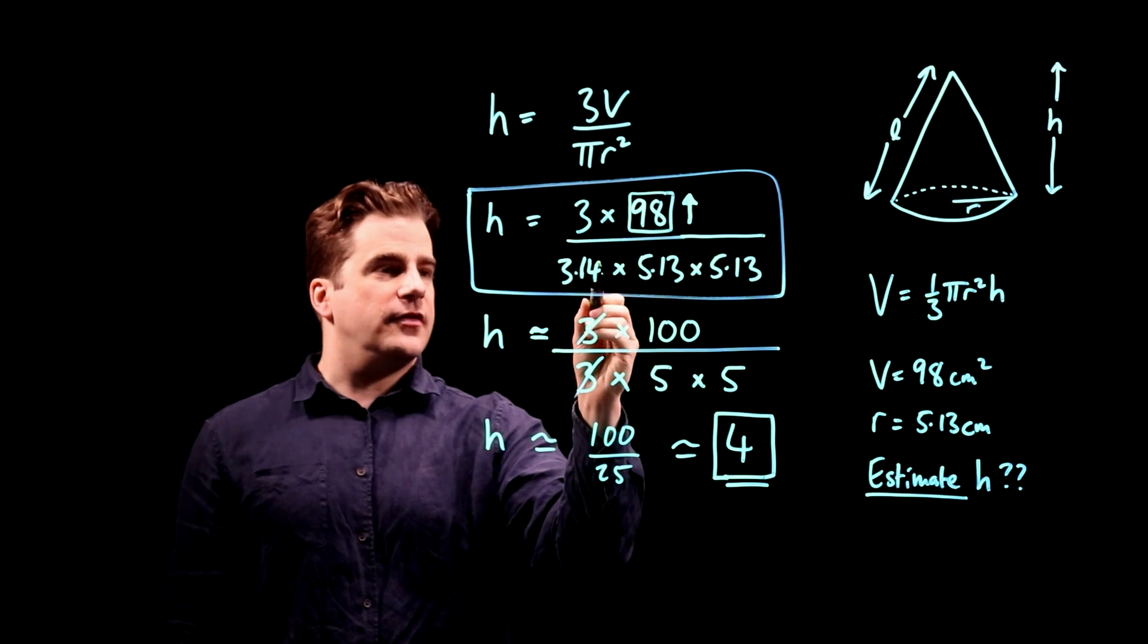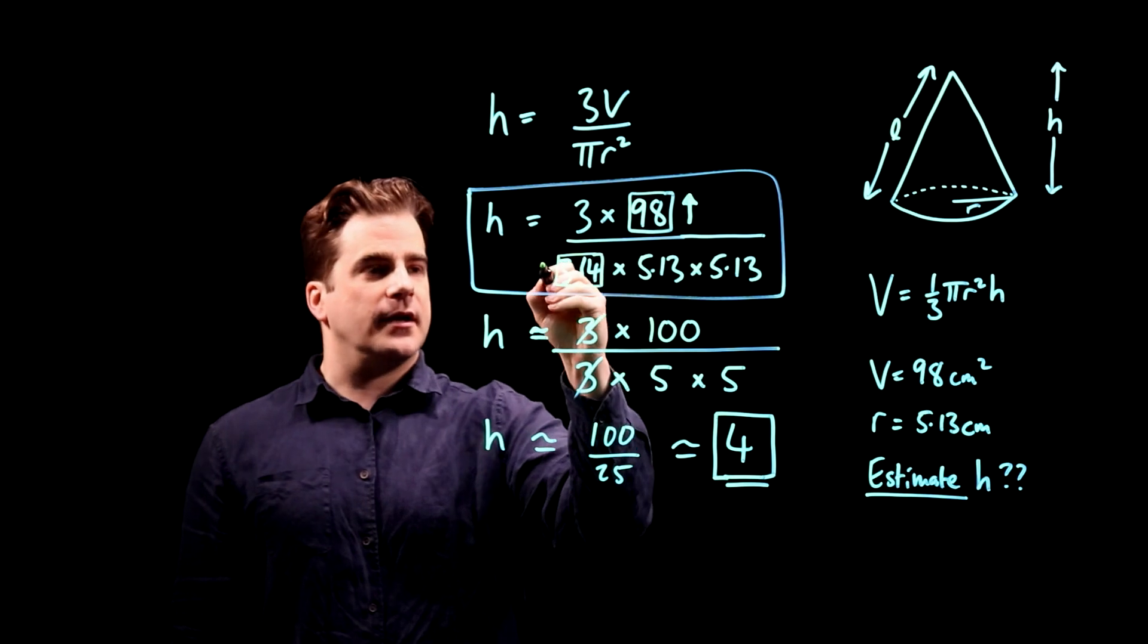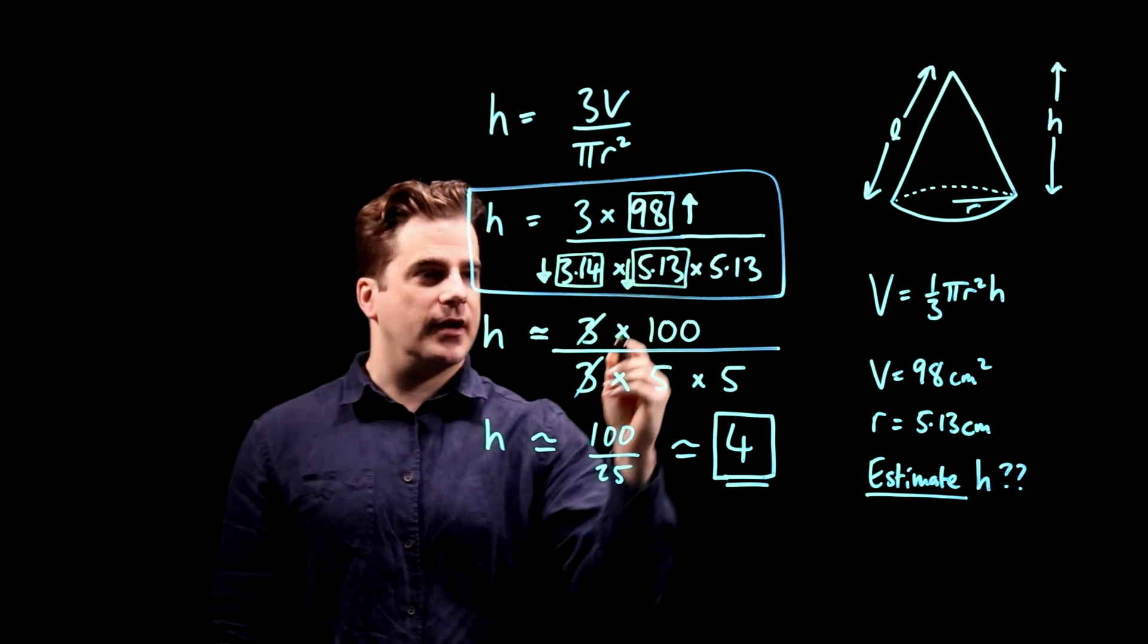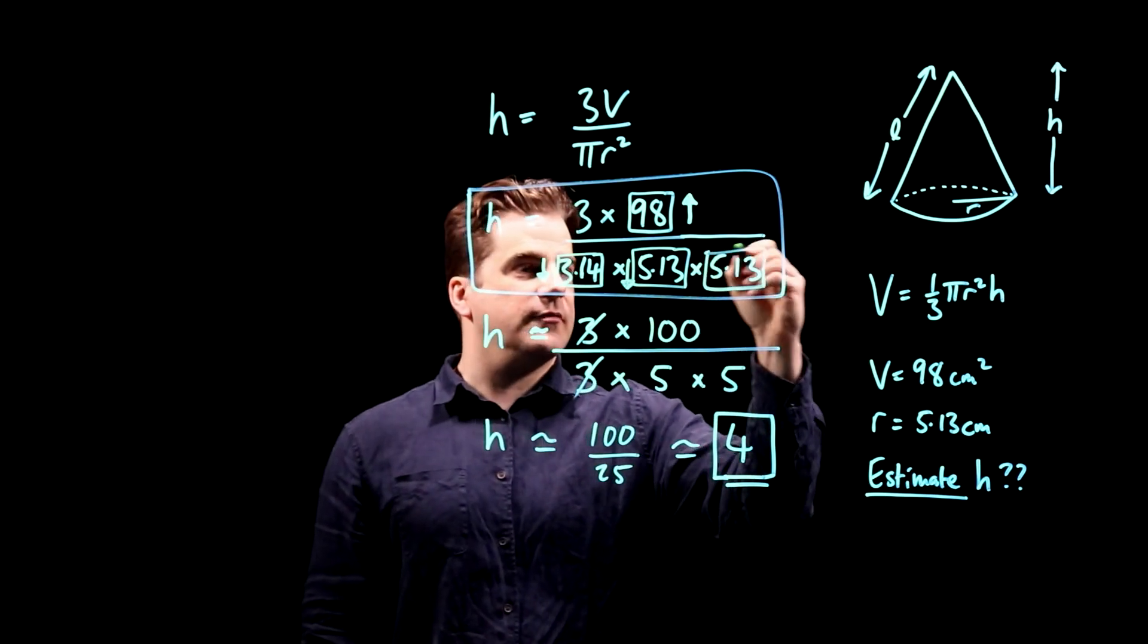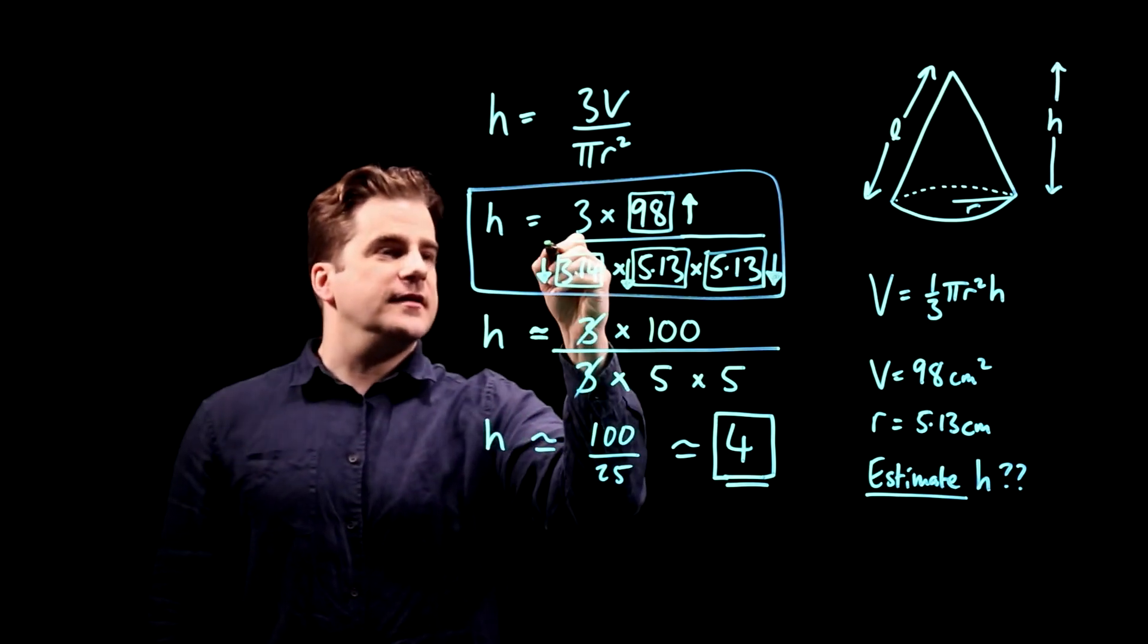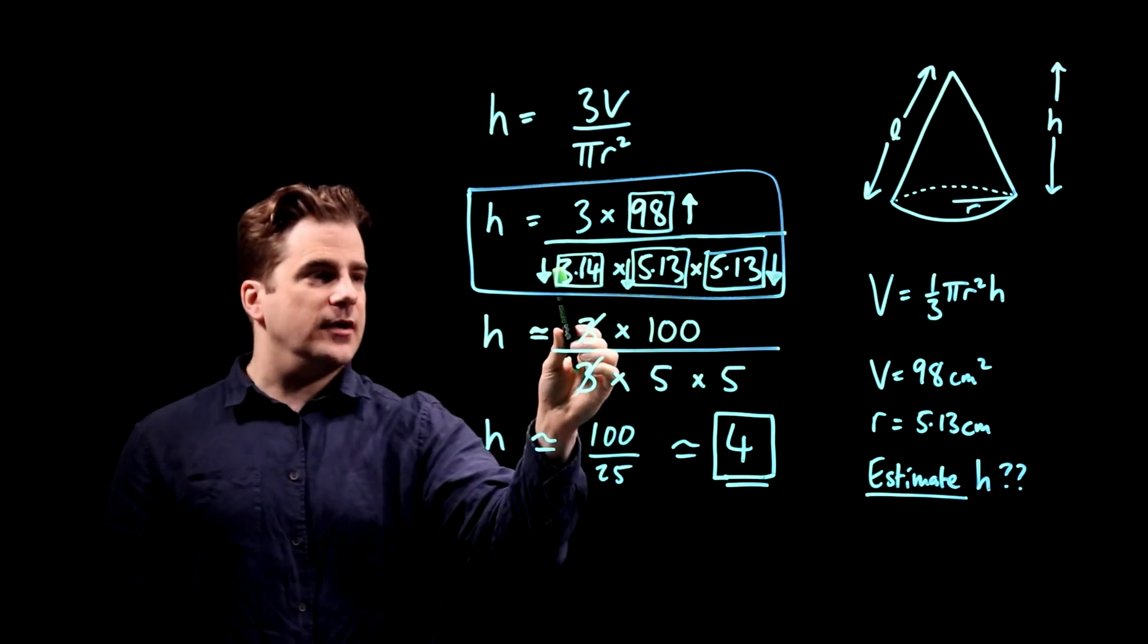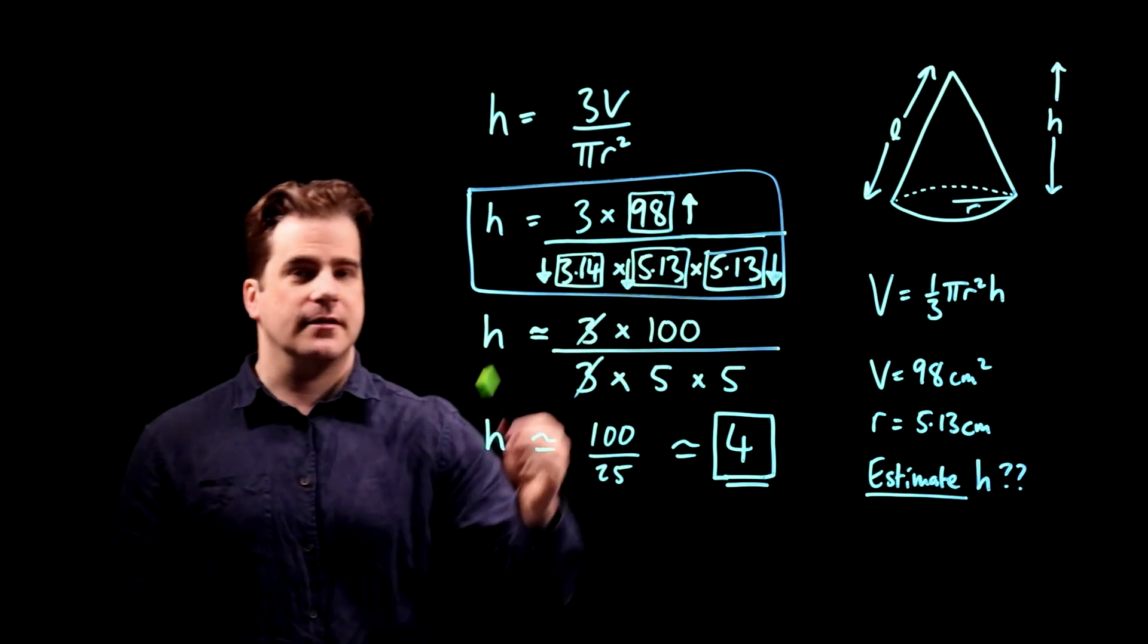Now, these numbers we made smaller. This number we made smaller. We went from 3.14 to 3, 5.13 to 5, and the same for this one. We made that one smaller. Now, these numbers are all in the denominator. And when you make numbers in the denominator smaller, you make the whole thing bigger.